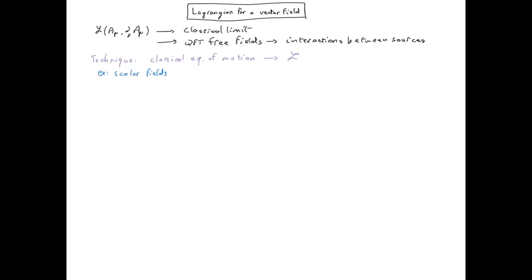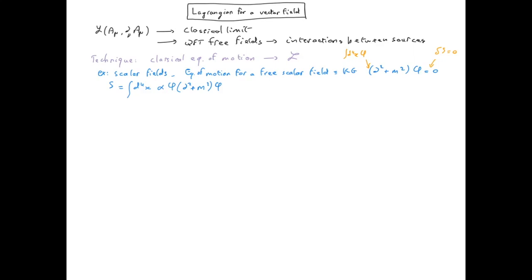Assume we know what is the equation of motion for a free scalar field — we know that it's the Klein-Gordon equation. We know that to get this equation, we have to take the action to be stationary. So that's the stationary action principle which gives us the classical limit of a theory. A possible action which will give such an equation of motion — the Klein-Gordon equation of motion — can be written by multiplying by the scalar field phi on the left and then integrating over spacetime. Alpha is just a constant which I need to determine, and I can easily check that by plugging this expression for the action into the stationary action principle, I will recover the Klein-Gordon equation of motion.